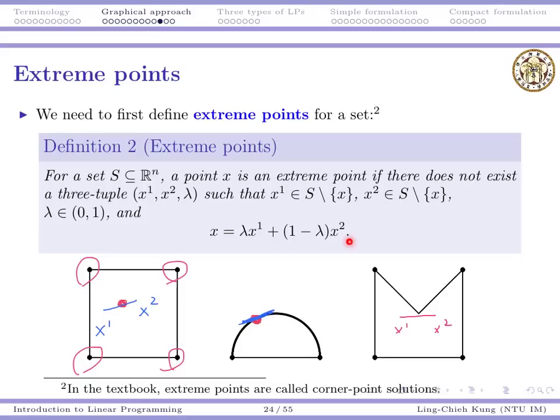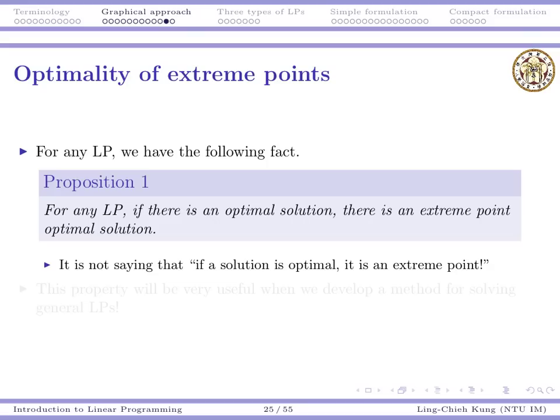One thing you may want to convince yourself is that for a linear program, you will not see a feasible region like this or like this. For a feasible region, it's always something like a triangle, a square, or a polyhedron. That means extreme points are somewhat intuitively corners for linear programs.